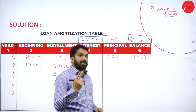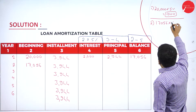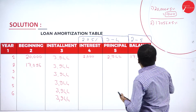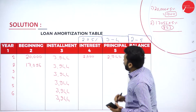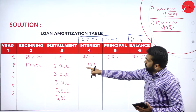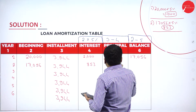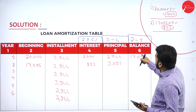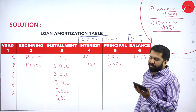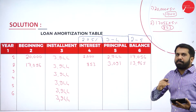Year 2 calculation: interest on 17,056 at 5% = 853. Principal = 3,944 minus 853 = 3,091. Balance = 17,056 minus 3,091 = 13,965. Up to year 2 we are done. The balance of 13,965 carries forward to year 3.